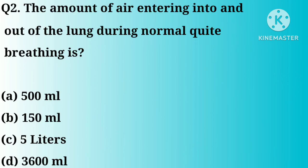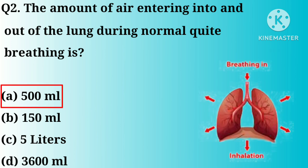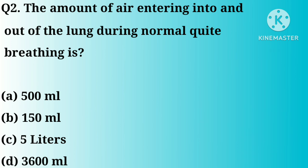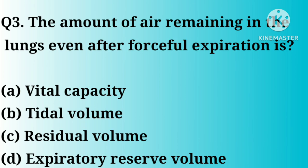Question number 2. The amount of air entering into and out of the lung during normal quiet breathing is: A. 500 ml. B. 150 ml. C. 5 liters. D. 3600 ml. Correct answer: A.